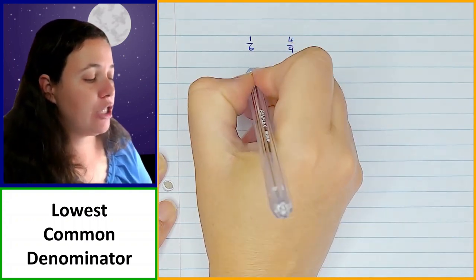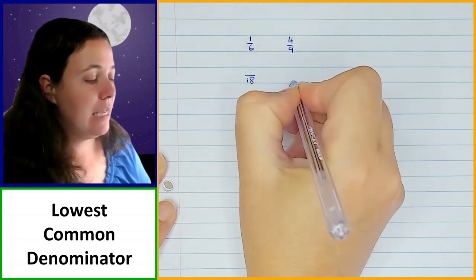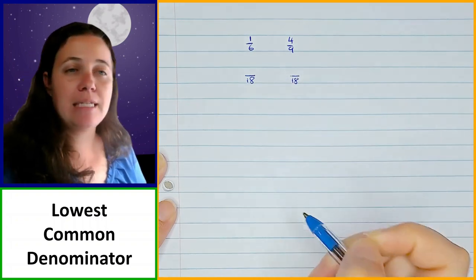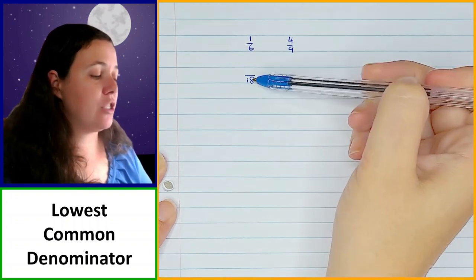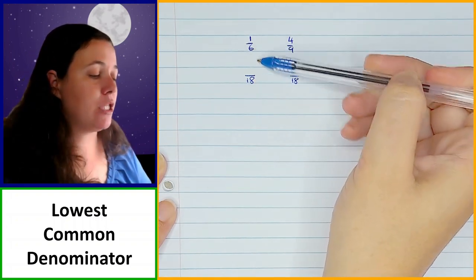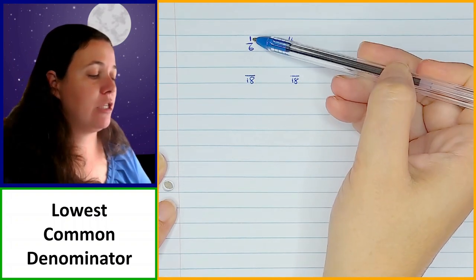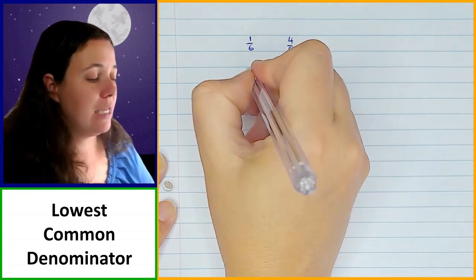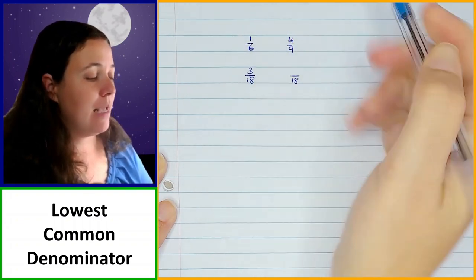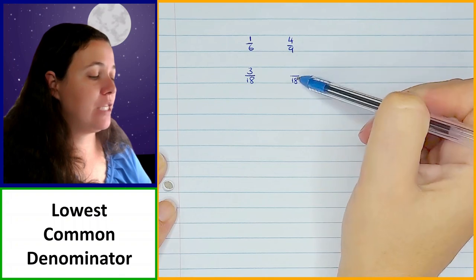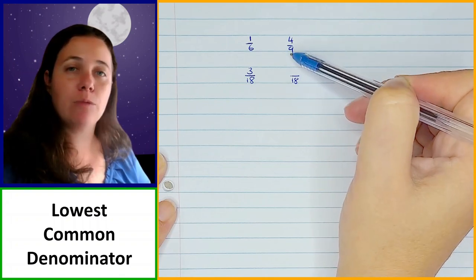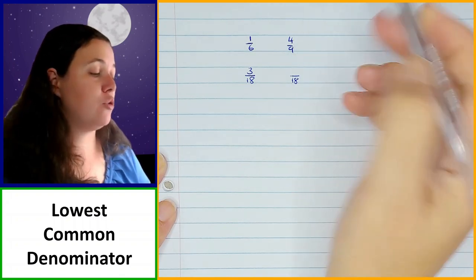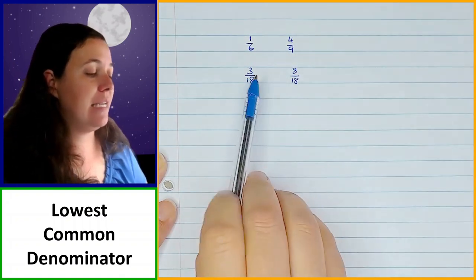So if you have an example where you've got the fraction 1 over 6 and the fraction 4 over 9, then the lowest common denominator would be 18, because 18 is the smallest number that 6 and 9 can both go into evenly without any remainders. So I would change this to something over 18, and this also to something over 18. How do I get from 6 to 18? I multiply by 3, so I'm going to change the 1 to 1 times 3, which is 3. And over here, how do I get from 9 to 18? I multiply by 2, so I'm going to multiply the 4 by 2 as well, giving me 8 over 18.